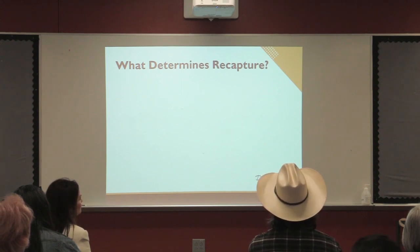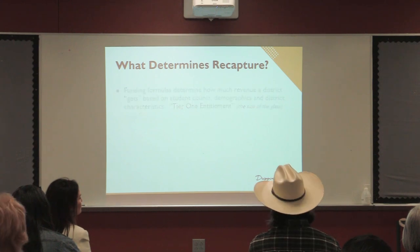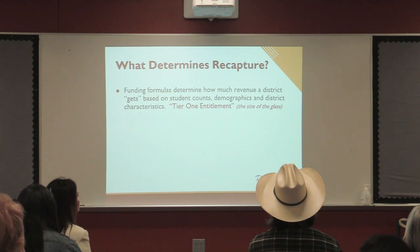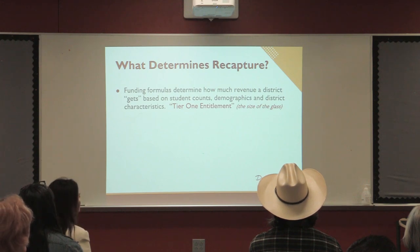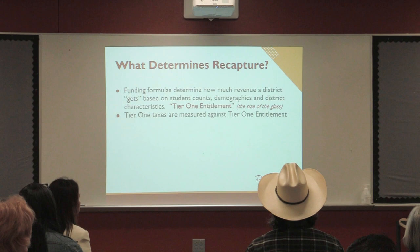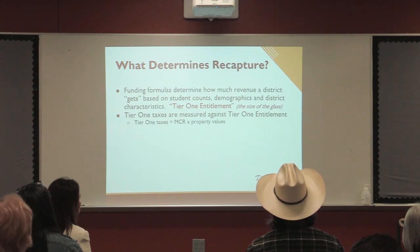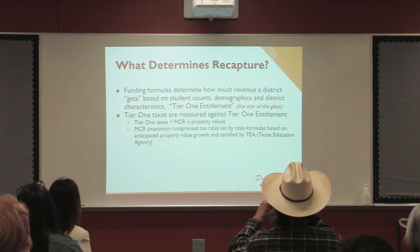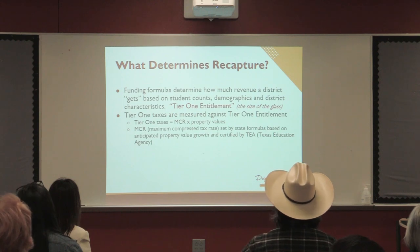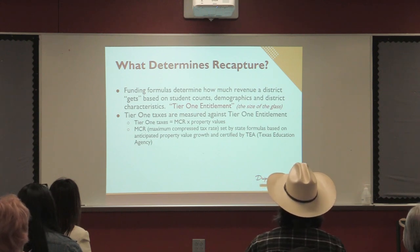What determines when recapture comes into play? The funding formulas determine how much revenue the district gets in tier one — based on student counts, types of students, and district characteristics. That becomes the tier one entitlement, the size of the glass we're trying to fill. We then compare our taxes at the tier one rate against that entitlement. The tier one taxes are the MCR times our property values, and the MCR is set by state formulas and certified by TEA.